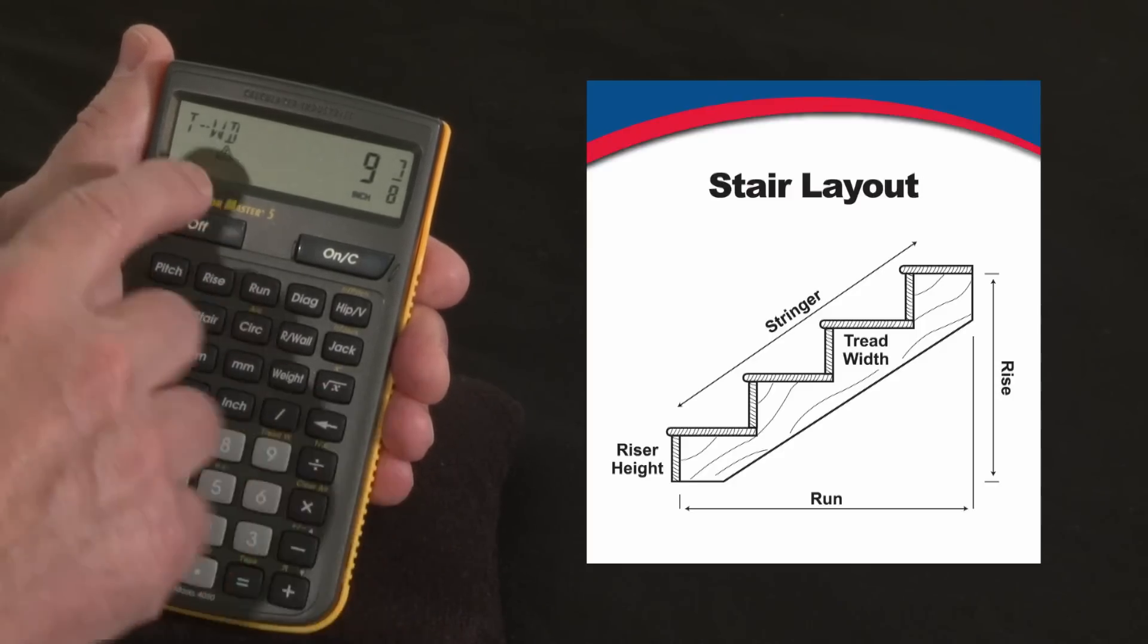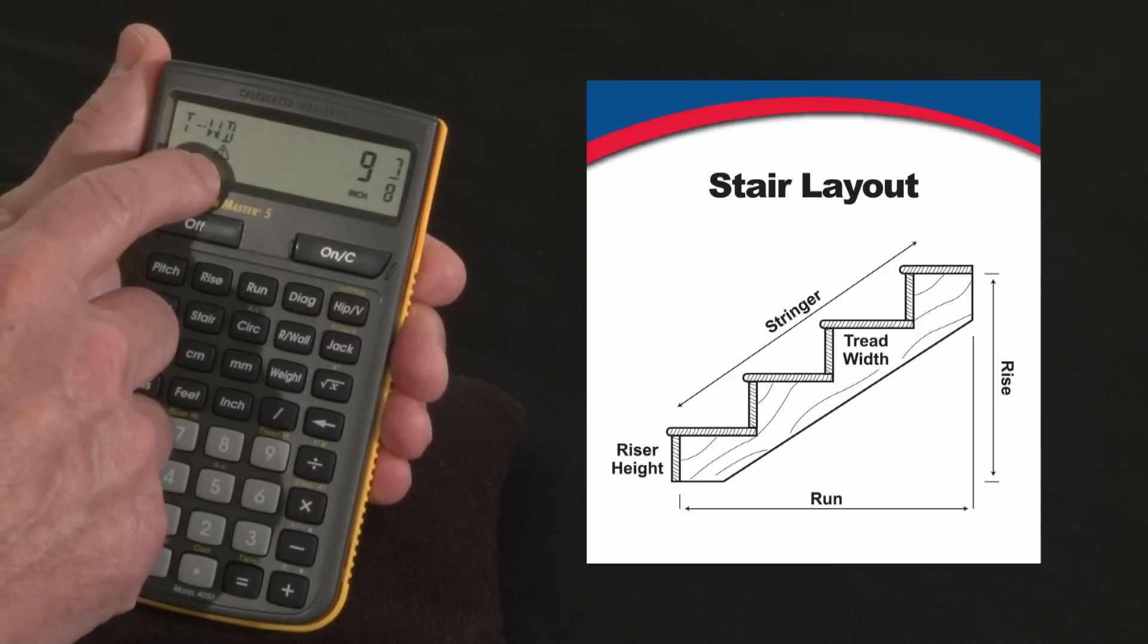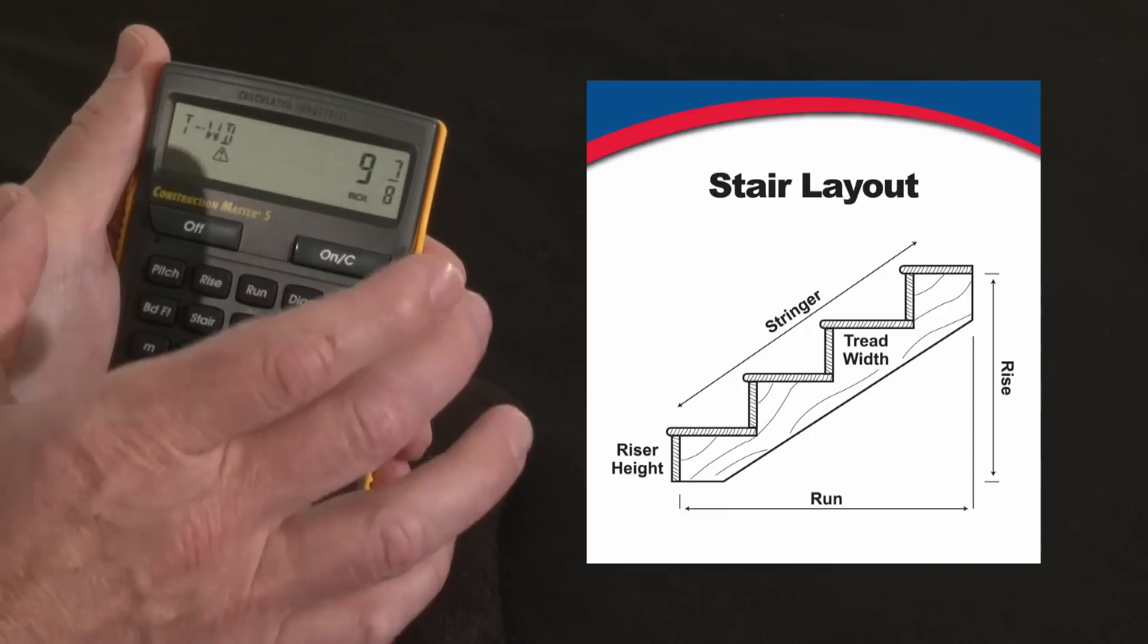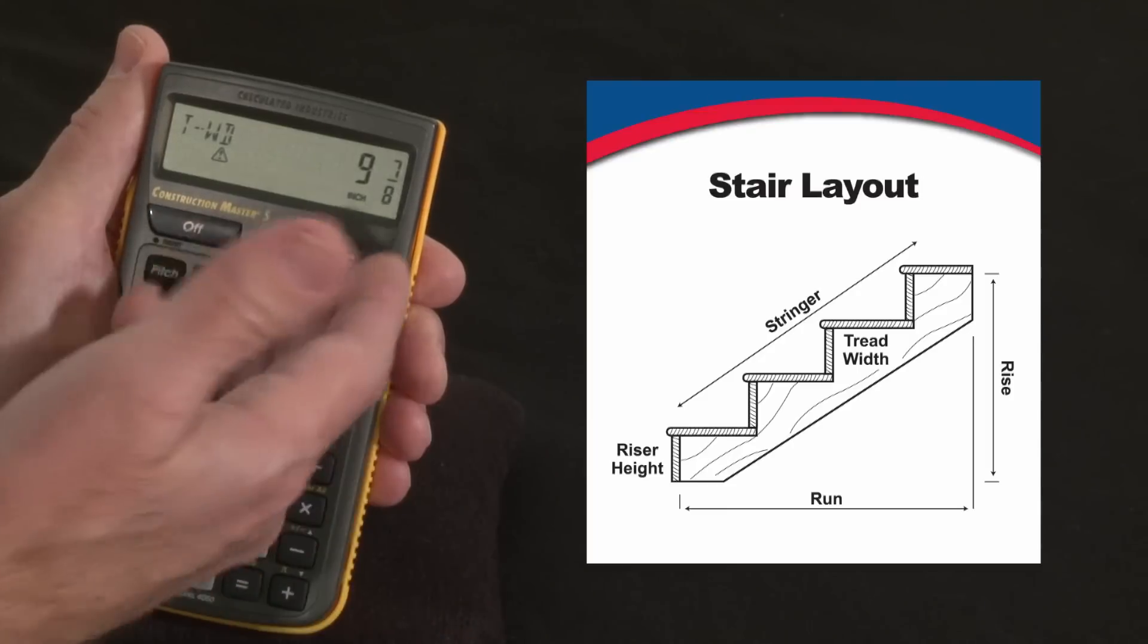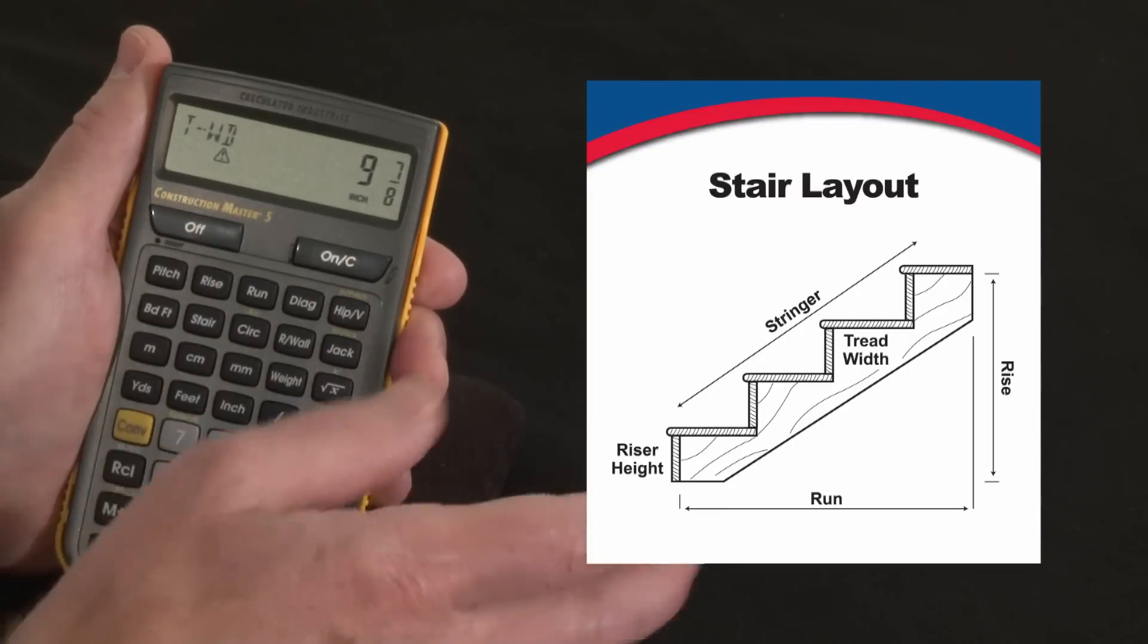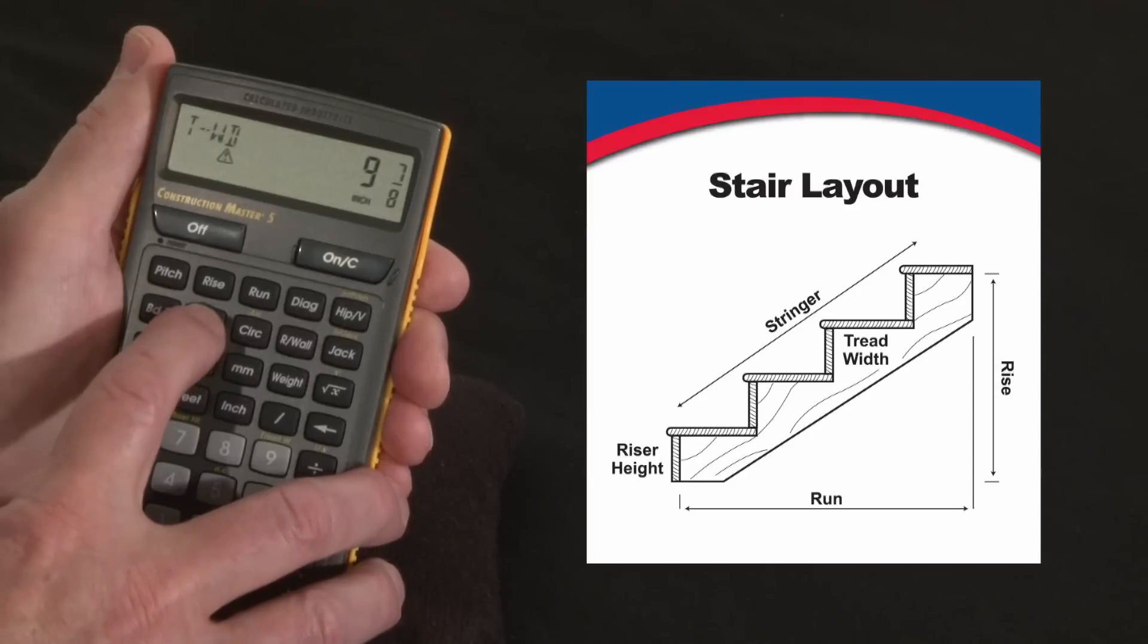The tread width, the little exclamation mark there says, hey, alert, this is below your target tread width of ten inches. It is nine and seven eighths. So I think we will check that out with the client, check it out with the inspector. I'm sure it will be fine. So let's keep going.